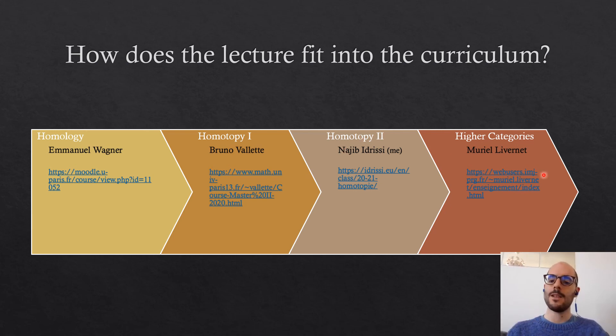A natural continuation of this course is the course given by Muriel Livernet on higher categories, which is getting rid of the extra structure of fibrations and cofibrations. These are interesting but are auxiliary data which are not strictly necessary to do homotopy theory.